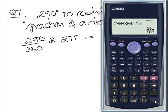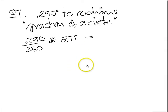There we go. 29 pi over 18 as a decimal, 5.06. So let's put that down, 5.06.